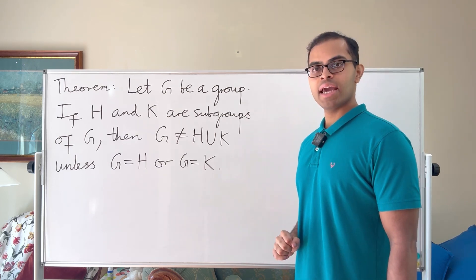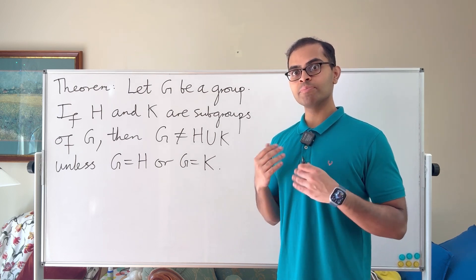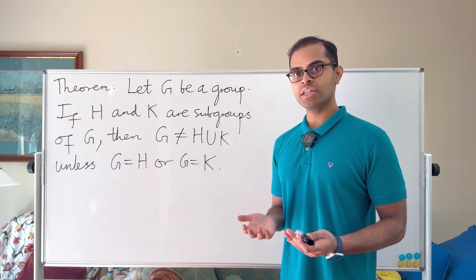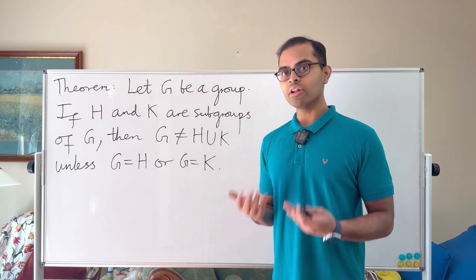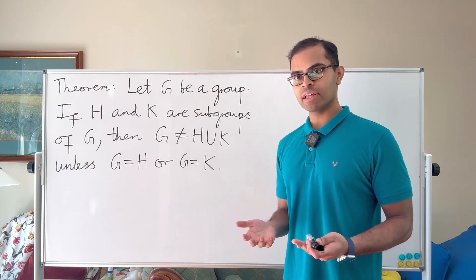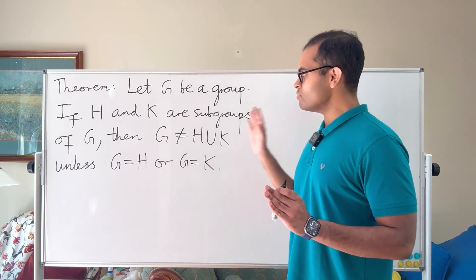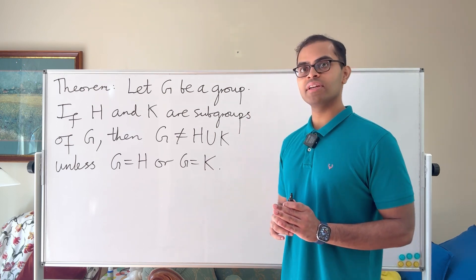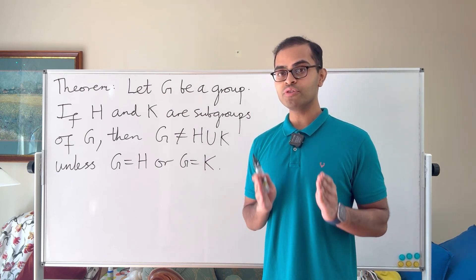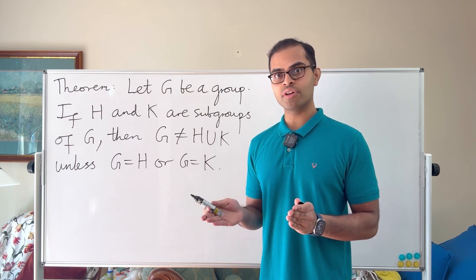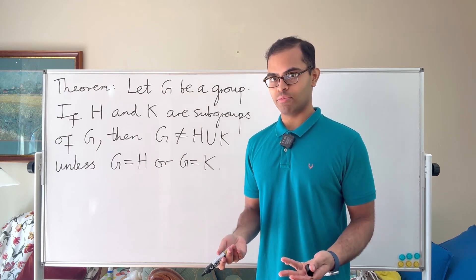I'm going to explain the intuition very visually and also give a rigorous mathematical proof. Watch till the end for a very beautiful consequence: the union of two subgroups of a group cannot itself be a subgroup.